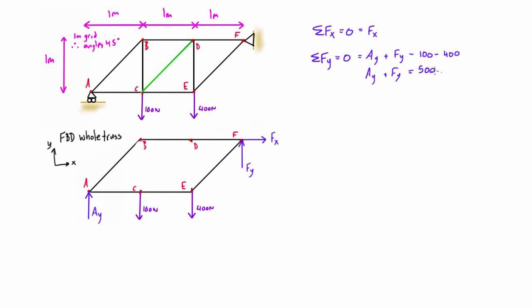Then we take the sum of moments about some point, let's say point A. We'll define our positive sense as counterclockwise direction and set that equal to zero. We'll figure out the moments that all these forces cause. We have negative 100 newtons times 1 meter minus 400 newtons times 2 meters, and then this one will be positive because it causes a counterclockwise rotation: Fy times 3 meters.